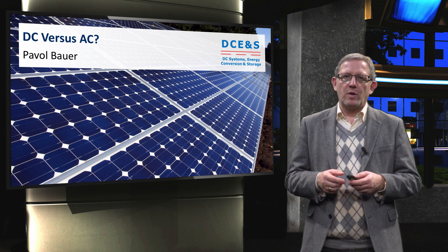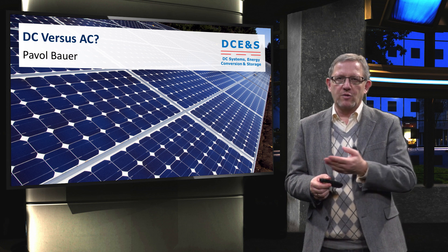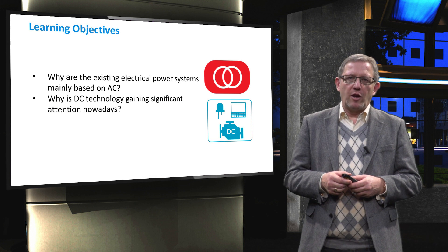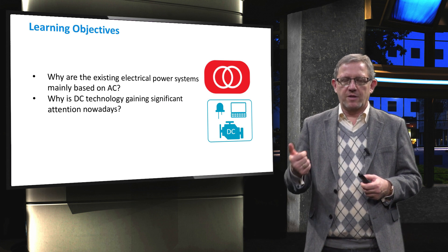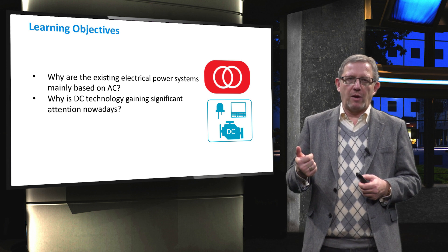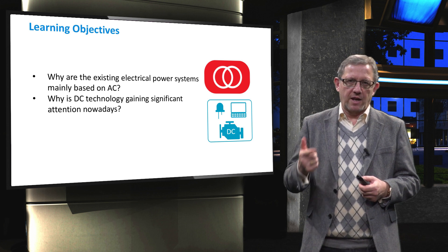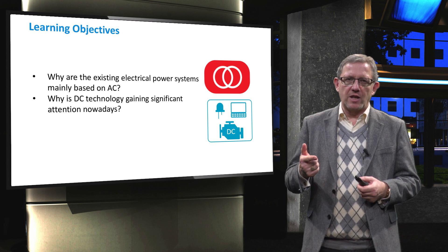In this video we start with the topic of DC vs AC. The main learning objectives will fall under two main questions: first, why the existing electrical power systems are mainly based on alternating current AC, and second, why DC technology is gaining significant attention nowadays.